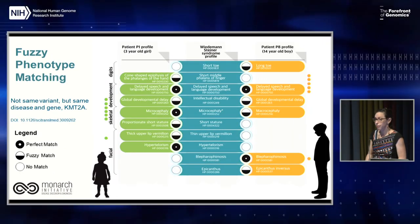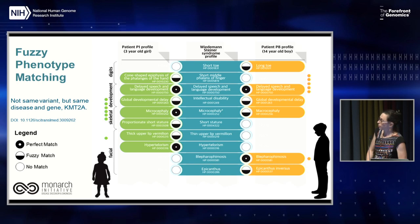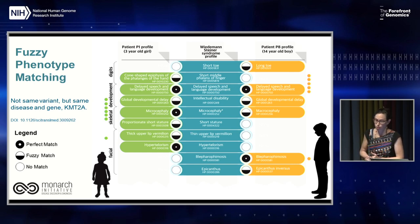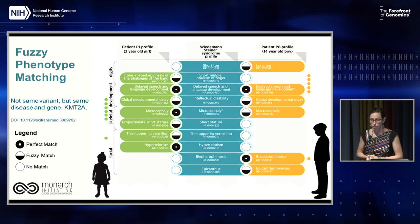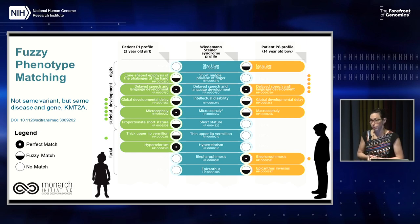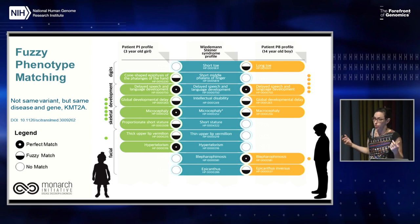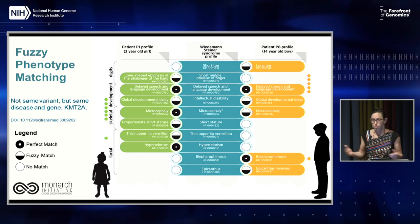Here's an example of using a phenotype profile to compare against known diseases. For Weidemann-Steiner syndrome, two patients came into a clinic within two weeks of each other, but the clinician did not recognize their phenotypic features. A three-year-old girl had slightly different features than a 14-year-old boy, both slightly different from the gold standard. Some phenotypes were actually opposite — the syndrome definition includes short toes, but the 14-year-old boy had long toes. Yet both had different variations in the same gene and were diagnosed with the same disease, showing the power of a fuzzy graph matching algorithm.